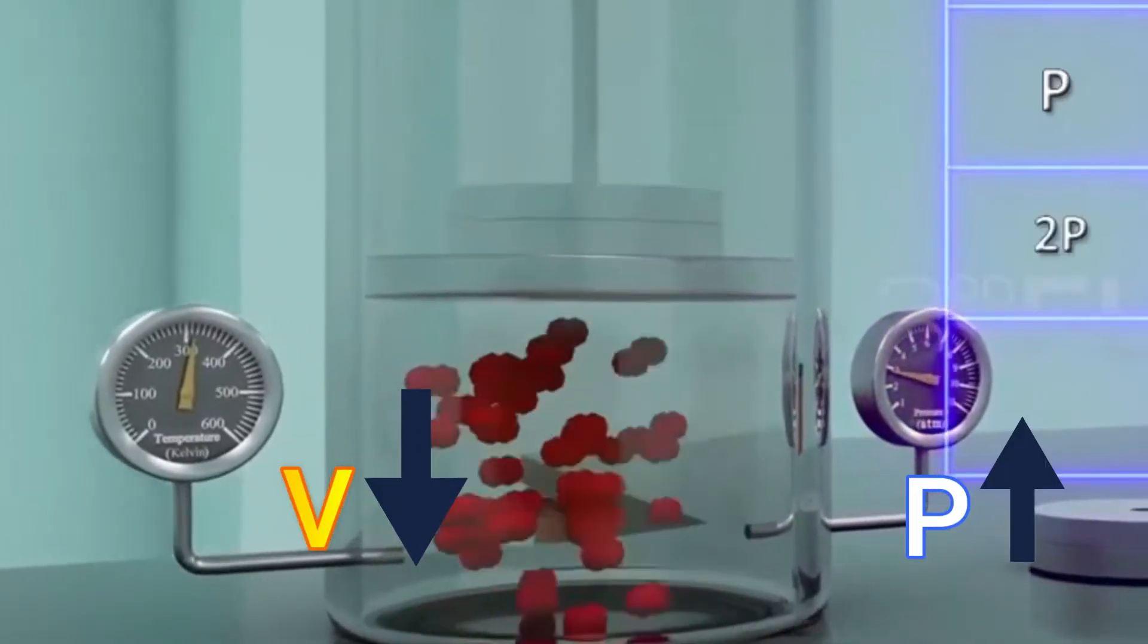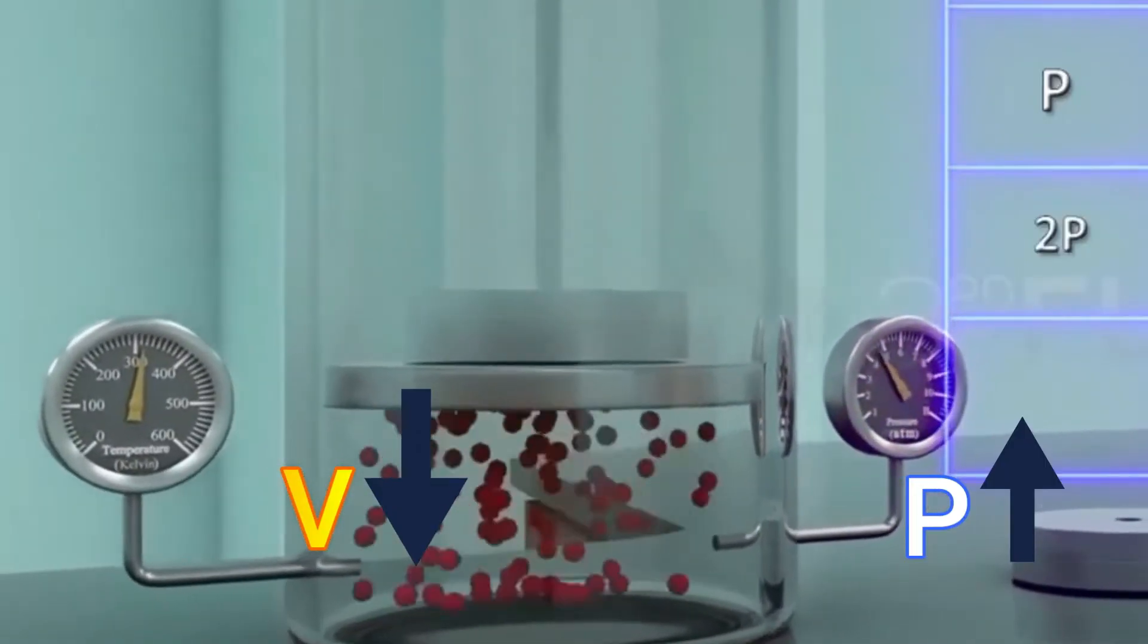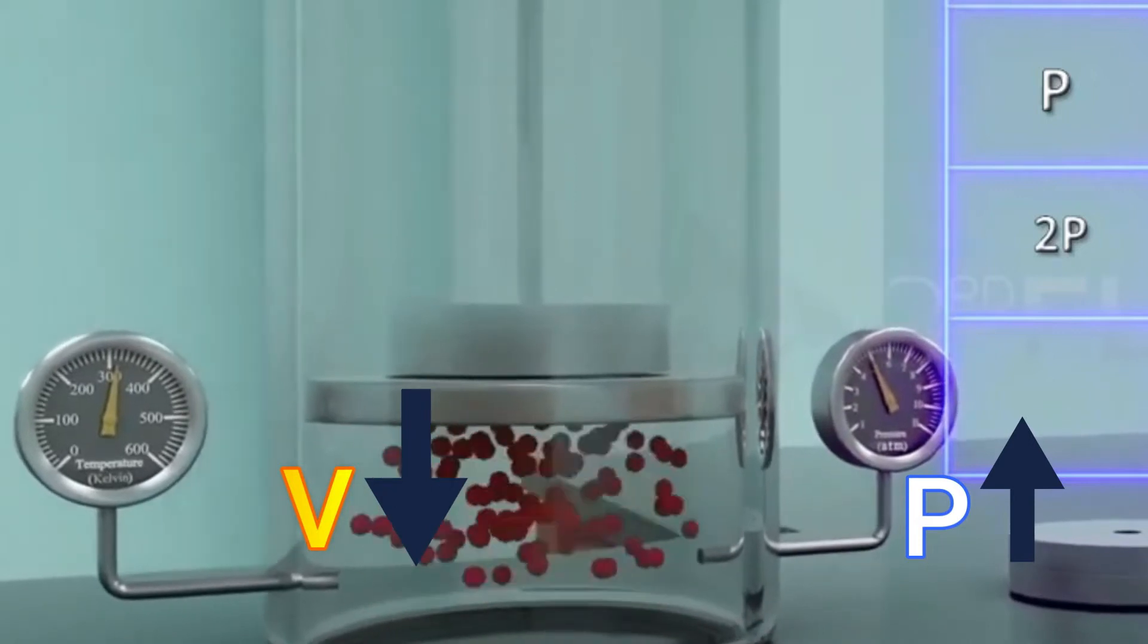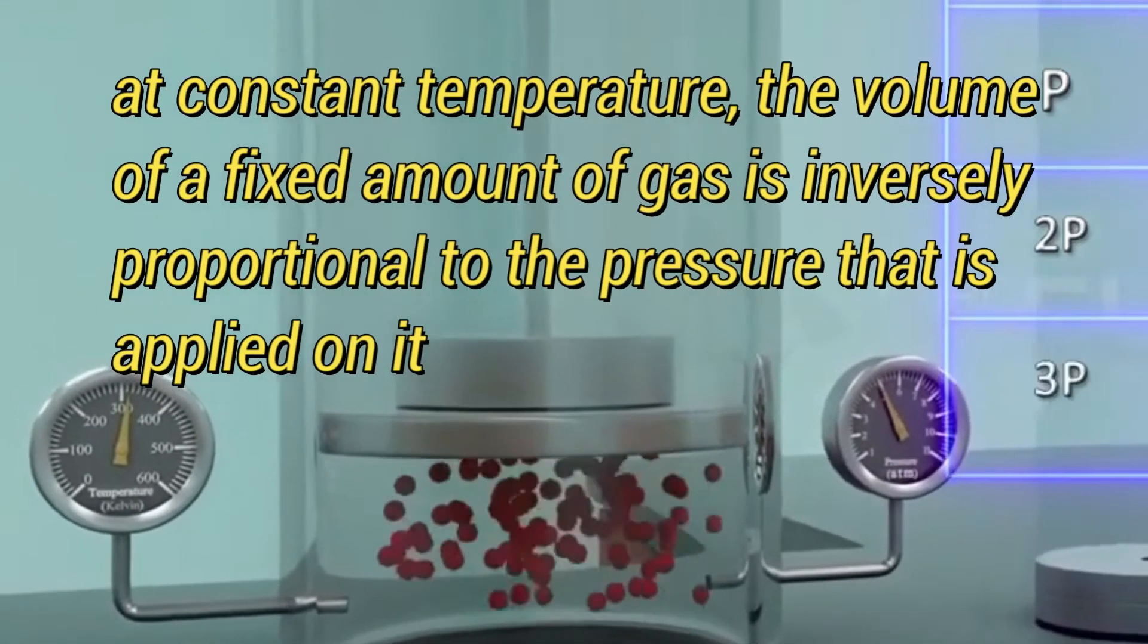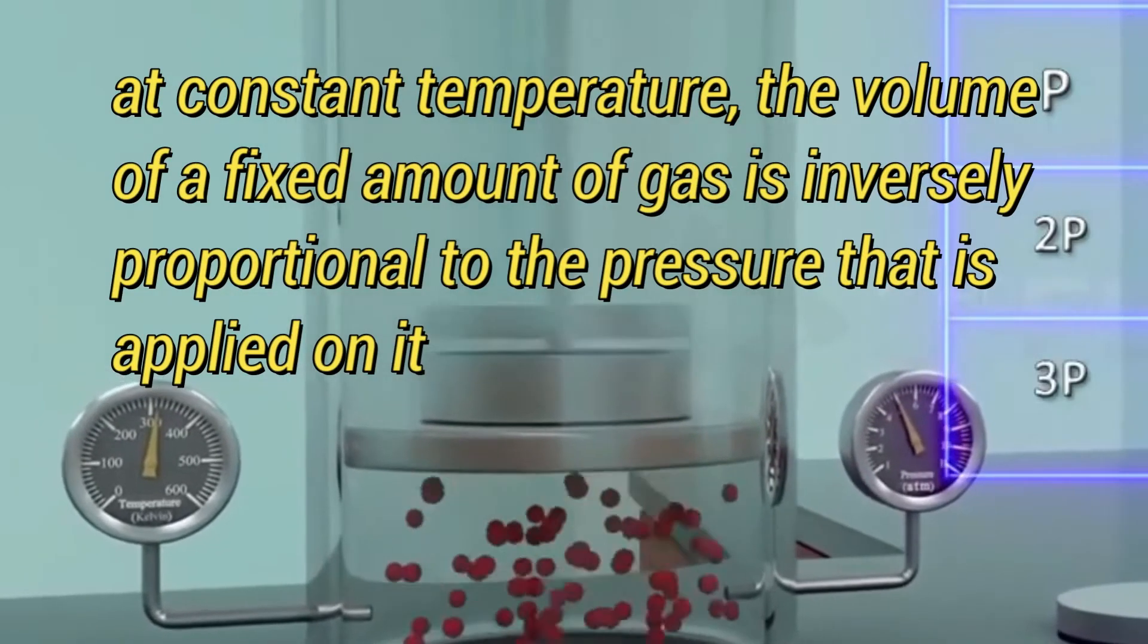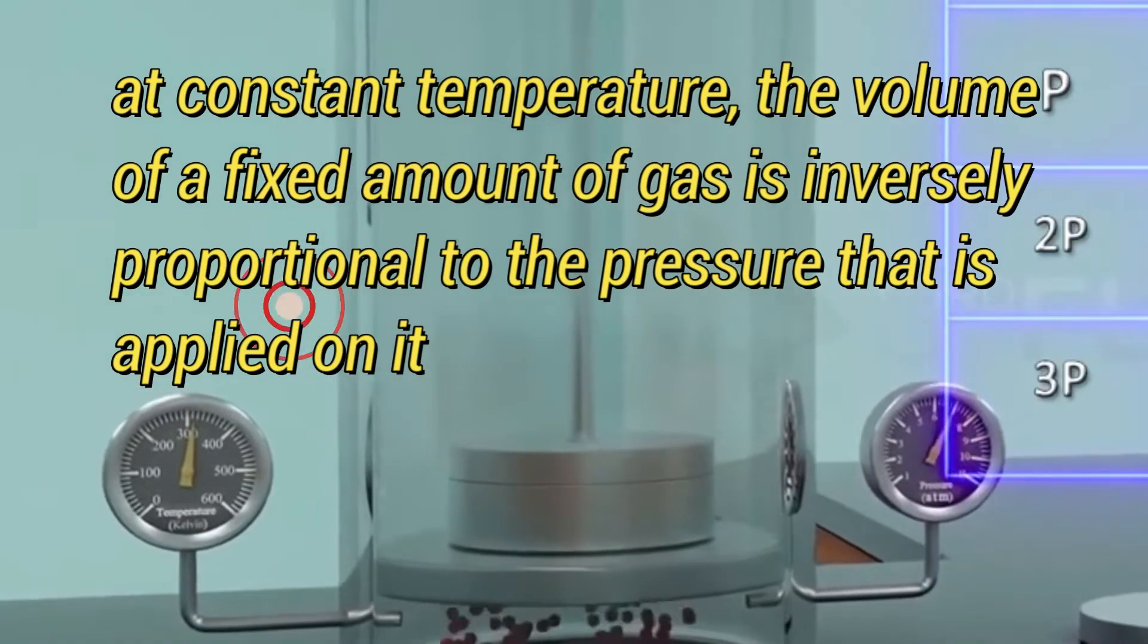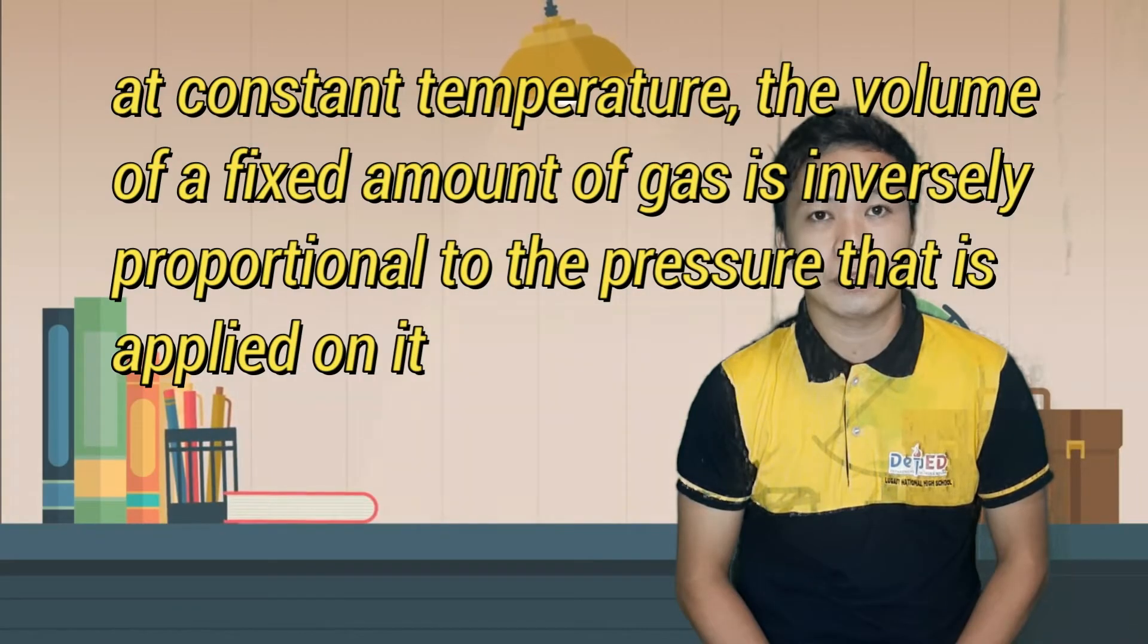Boyle's Law is the result of these two observations. Therefore, Boyle's Law states that, at constant temperature, the volume of a fixed amount of gas is inversely proportional to the pressure that is applied.